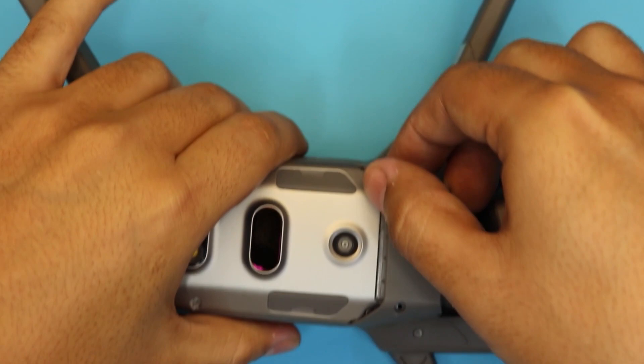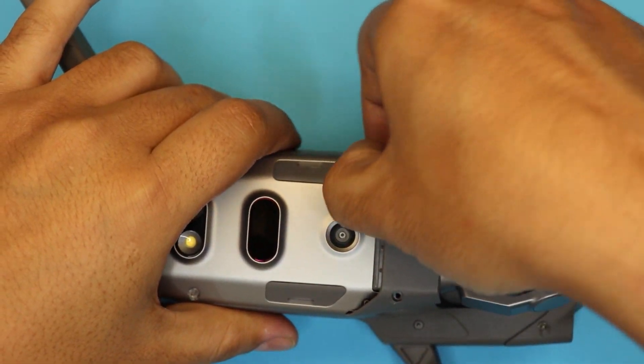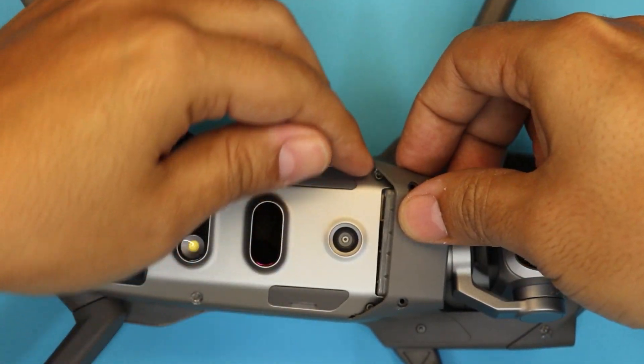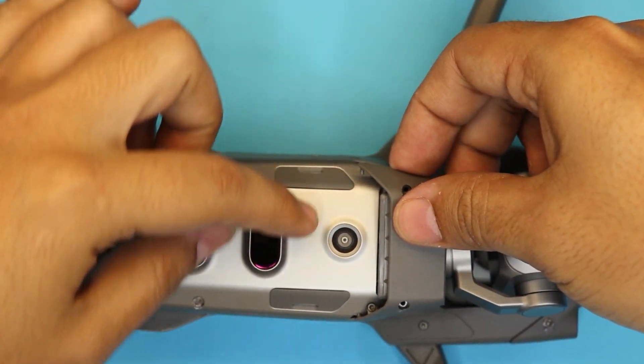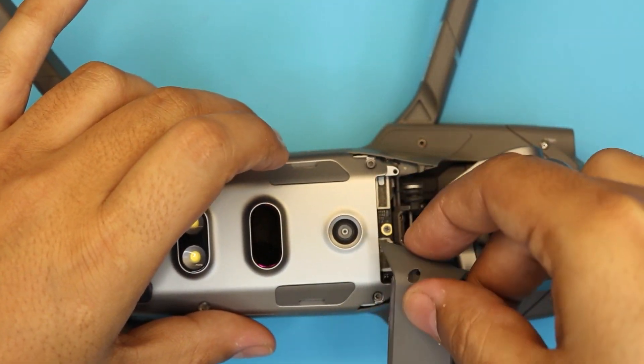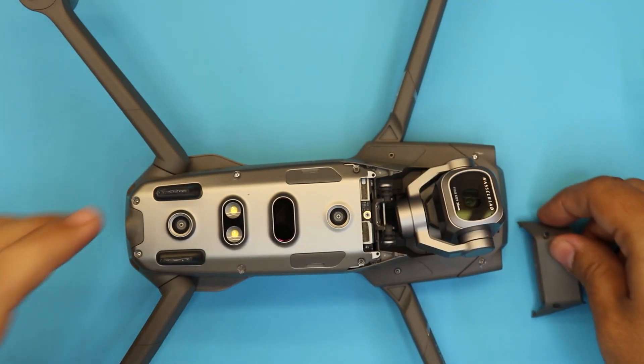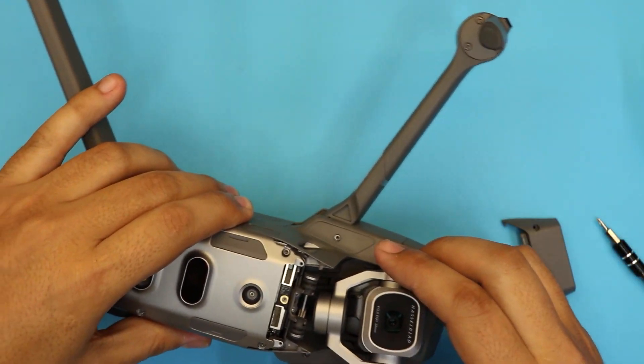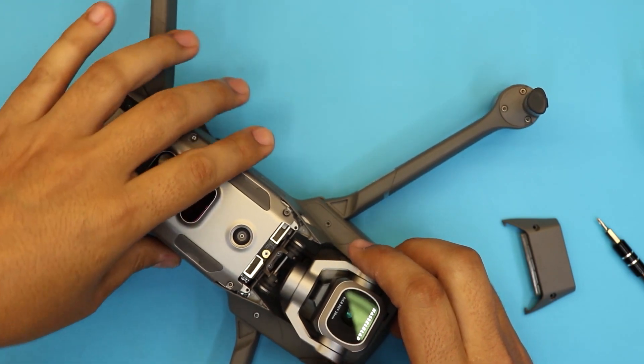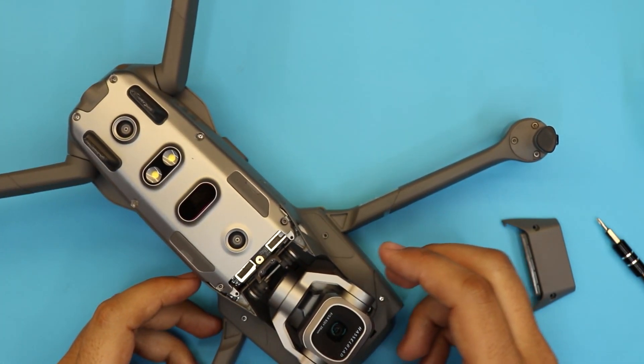So what I'm gonna do is I'm gonna lift it up towards this side, so I can pull this clip out, and the other one I'm just gonna slide the whole thing this way.